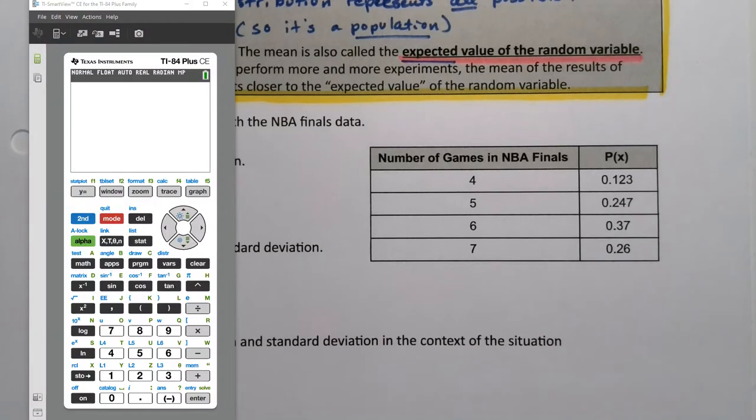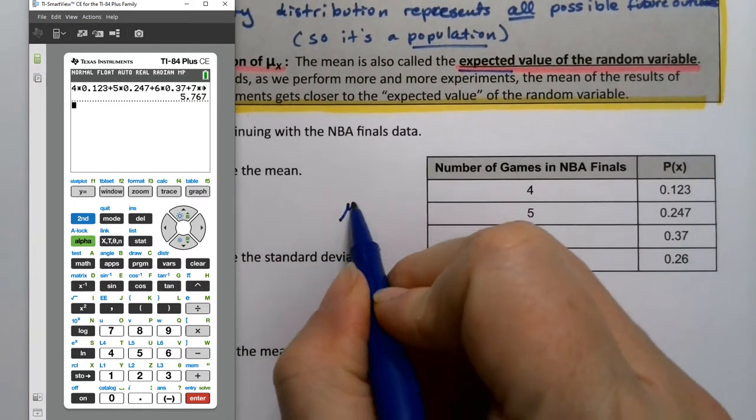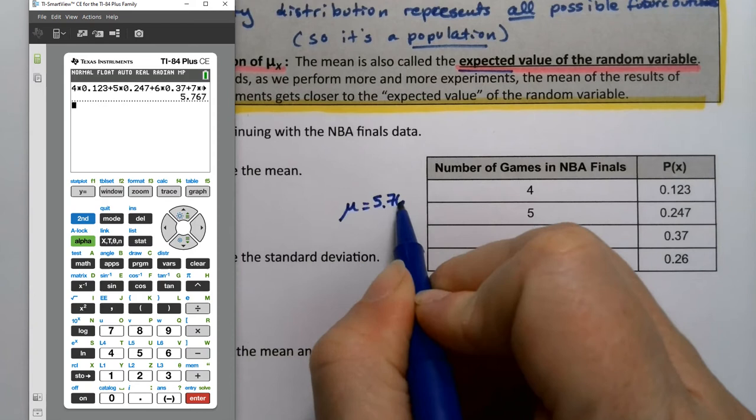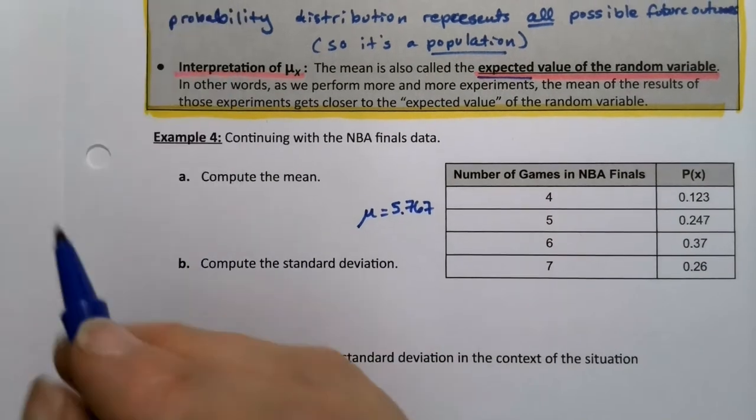So I could take my calculator and take 4 times 0.123, plus 5 times 0.247, this is doing it by hand, 6 times 0.37, plus 7 times 0.26, and that finds the mean for us. So the mean would be 5.767.